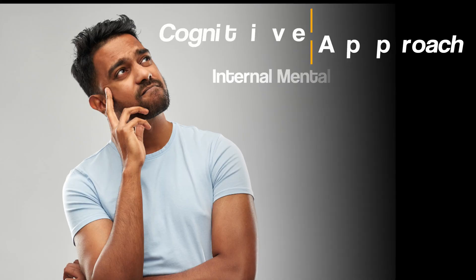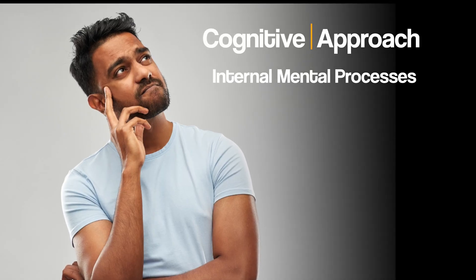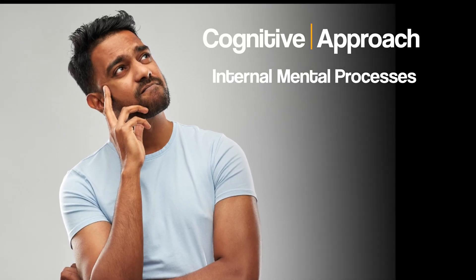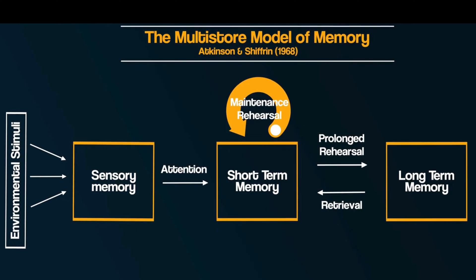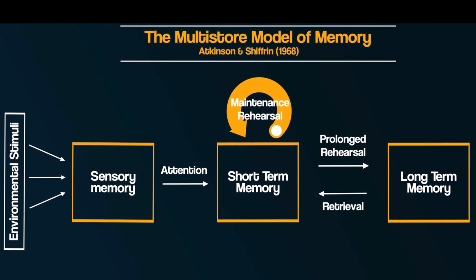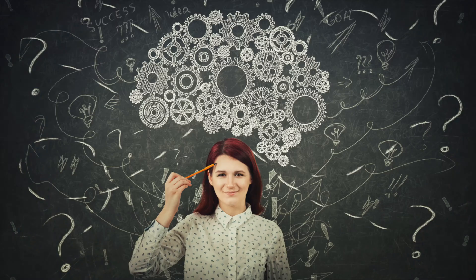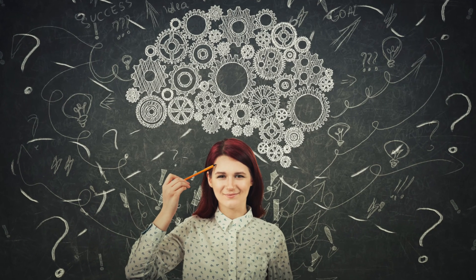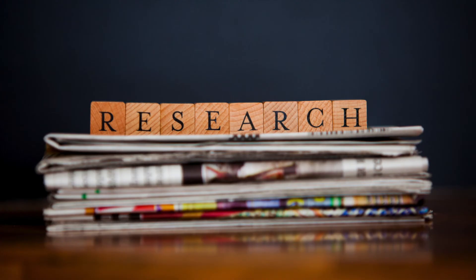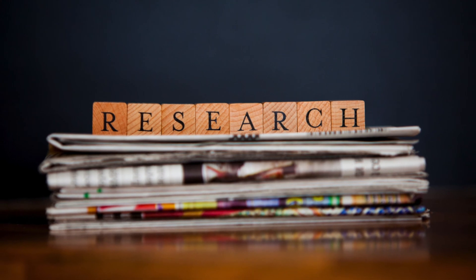For the cognitive approach, the main idea is on how internal mental processes are involved in our behaviour. One of the key features of the cognitive approach is theoretical models, such as the multi-store model of memory that we explored in the previous video. There is lots of research into our cognitive mental processes and the theoretical models, which we will consider now.